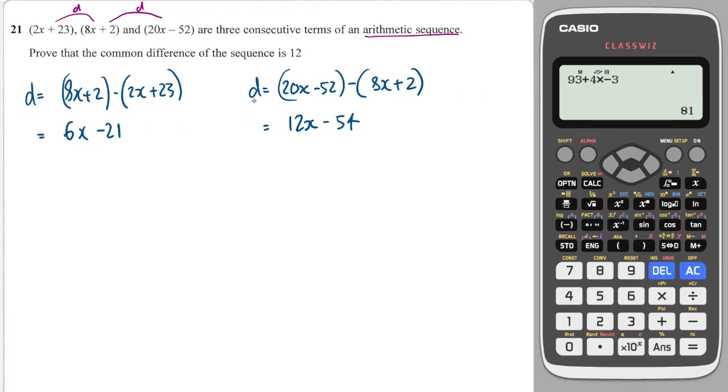So we've got two expressions for d, and that means that if they're both equal to the same thing, they must both equal each other. So I can write 6x minus 21 is equal to 12x minus 54. Minusing 6x on both sides gives me this. Adding 54 to both sides gives me this. And then dividing through by 6 gives me 11 over 2. So x is equal to 11 over 2.